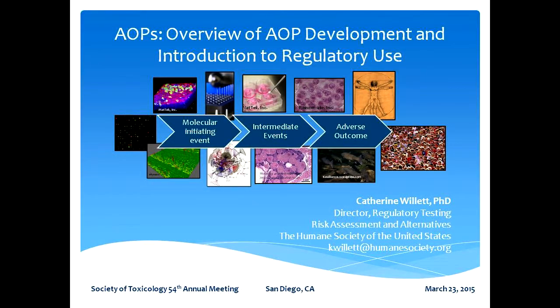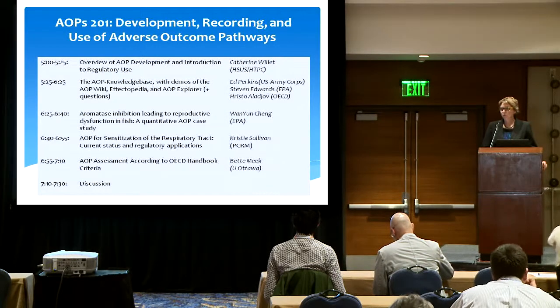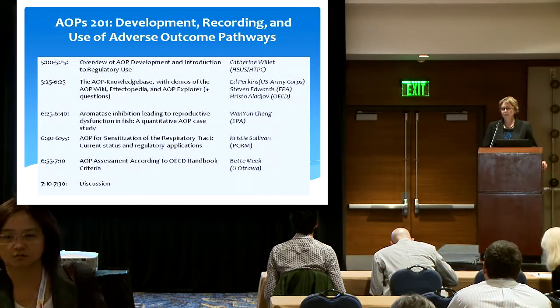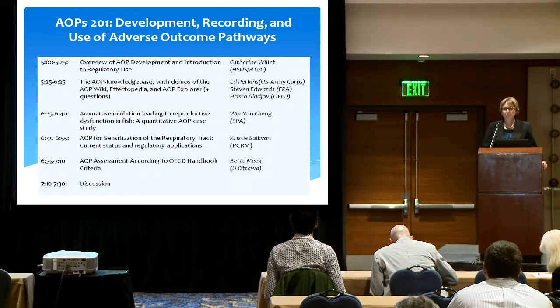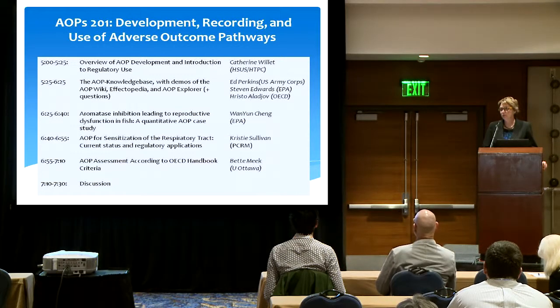My name is Kate Willett. I am from the Humane Society of the United States. I coordinate something called the Human Toxicology Project Consortium, and one of the aims of that consortium is to promote pathway-based approaches to toxicology.